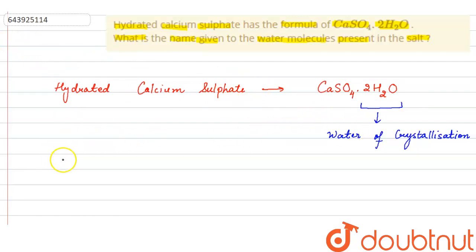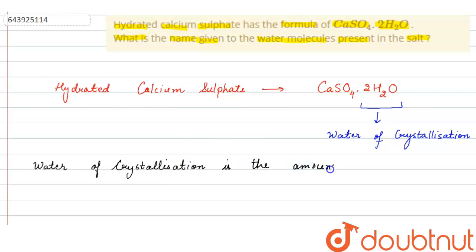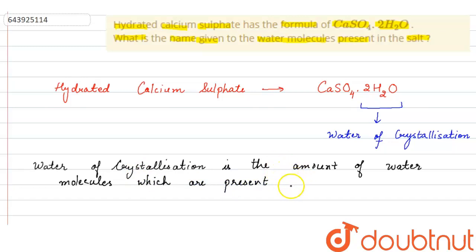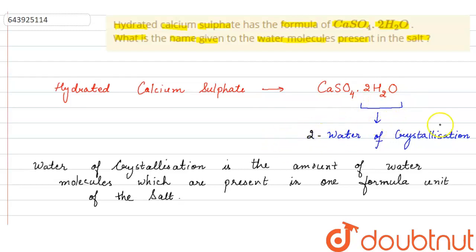If we look at the definition of water of crystallization: water of crystallization refers to the fixed number of water molecules present in one formula unit of a salt. Here we have two water molecules, so we can say that there are two waters of crystallization.